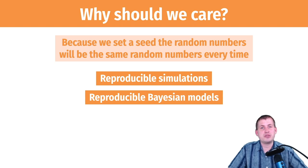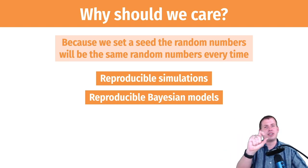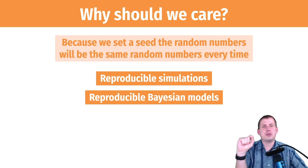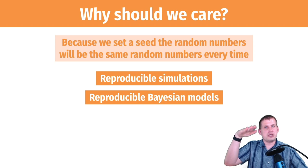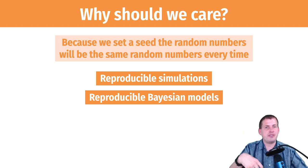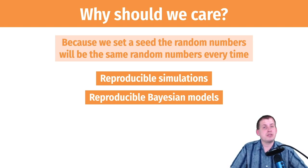This is also important for Bayesian modeling. Bayesian regression essentially generates a whole bunch of random numbers until it settles on a specific value. If you set a seed when doing Bayesian regression, it will always choose the same random numbers every time you run the analysis, so other people can reproduce your results.